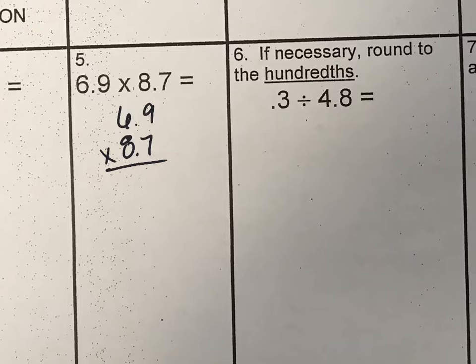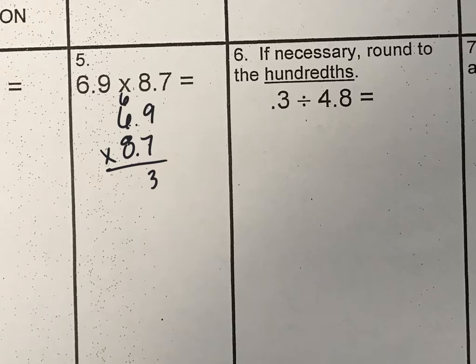Okay, 9 times 7 is 63, and we have 7 times 6 plus 6, and that's going to be 42 plus 6, which is 48. And then we have 8 times 9, which is 72, and 8 times 6 is 48 plus 7 is 55.